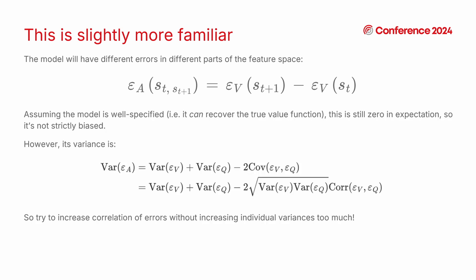Another way to look at this is the variance of your advantage estimate. The key thing to note on the bottom equation there is there's this correlation term at the end which comes with a negative sign. So if you can increase the correlation between the errors of the two component models without increasing the variance of the individual models too much then you end up with a better advantage estimate. So a strategy here is to try and make the errors of the two models correlate as much as you can.